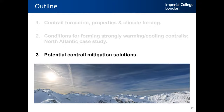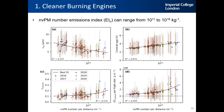The first mitigation solution is cleaner burning engines. A lower NVPM number emissions index per flight distance reduces contrail energy forcing through the same mechanisms described earlier. However, this is a long-term solution — aircraft typically have a lifecycle of 20 years, so it will take time to renew the fleet and design engines that emit less NVPM per flight distance.